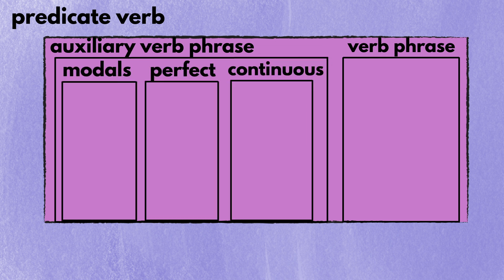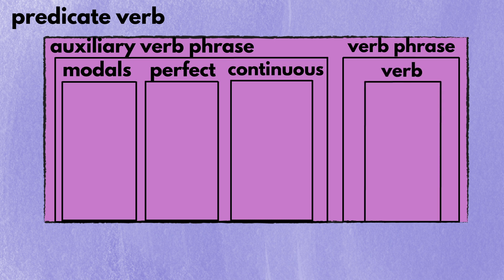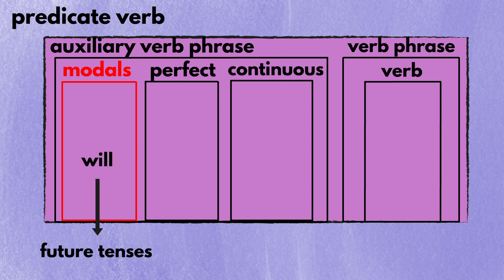The verb phrase has one part — the verb — and this part is mandatory. Modals are words such as will, would, must, can, could, may, might, should, and so on. Although their primary function is to express possibility and obligation, the word will expresses future tenses. Put will in the modals if the sentence is in a future tense. Take it off if it's in the present or past tense.